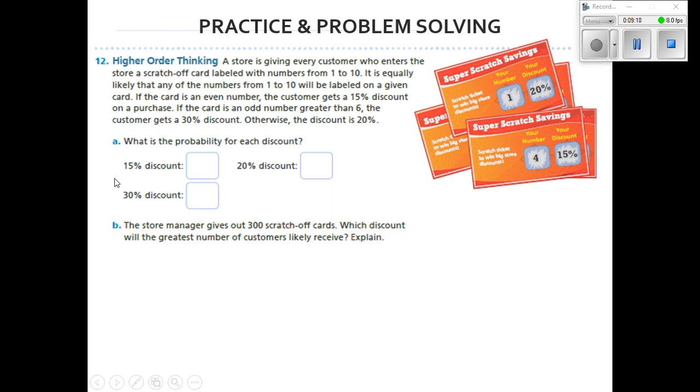What's the probability of getting the 15% discount? We said if it's an even number, right? That means about half of the time you're going to get the discount of 15%.